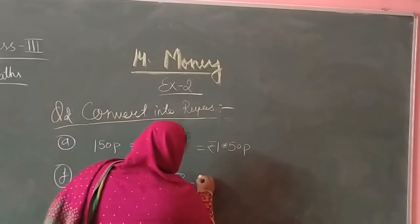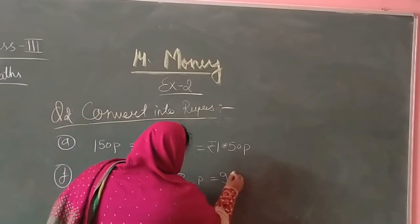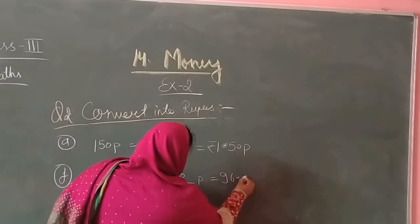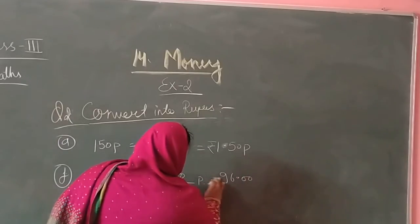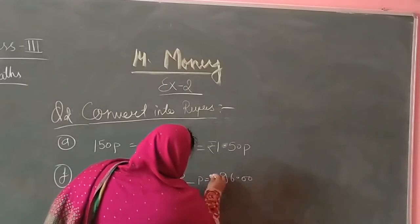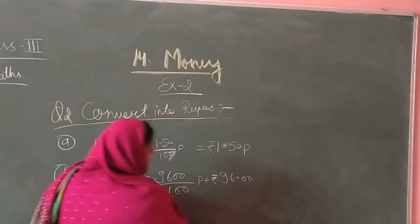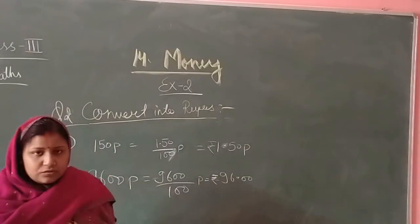Next, we have 9600 paisa. We divide by 100 to get 96.00 rupees. So this is 96 rupees.